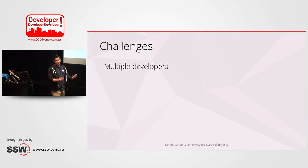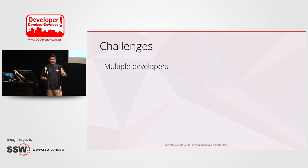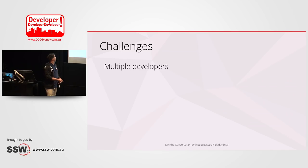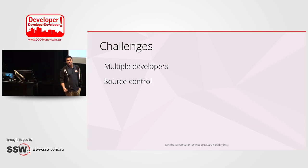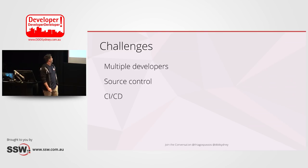One challenge is multiple developers — not really a technical challenge, but interpersonal challenges that happen all the time. Another challenge is source control. Any project nowadays has source control, but in an enterprise context that means a more mature way of handling it — whether you're using git flow or something similar.